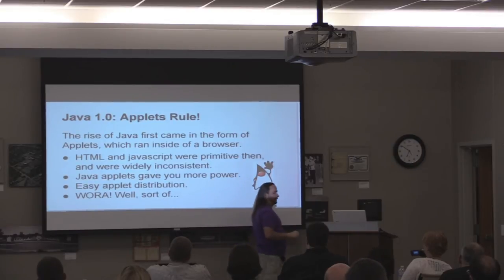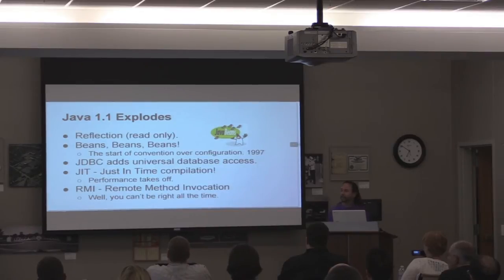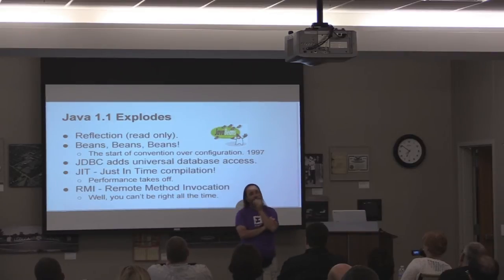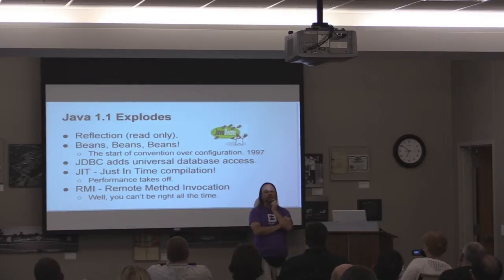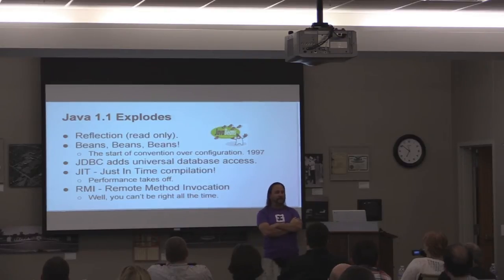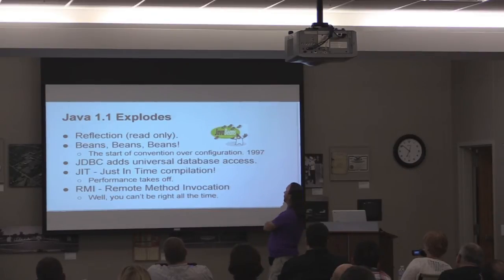But in an applet, you could embed what looked like an application or a really complicated web page — think what you do today in HTML5 with a canvas. You could do that inside a common code base distributed right through the web browser. Java 1.1 came out and it really exploded. It had all kinds of really interesting features that were pretty new to most languages. Reflection was first introduced, so you could do things that today are trivial — common concepts like in Spring, Java Beans, coding by convention rather than configuration, introspecting classes to figure out how to connect bits together.